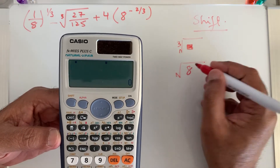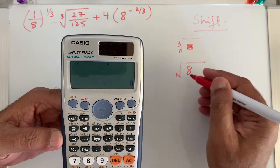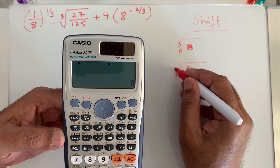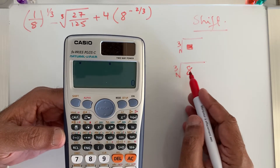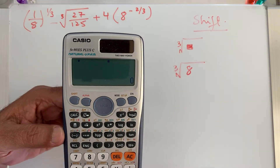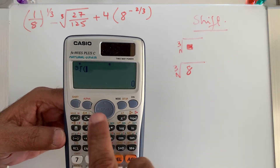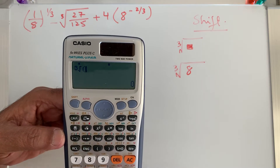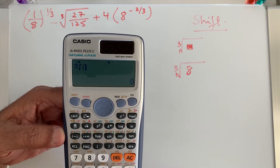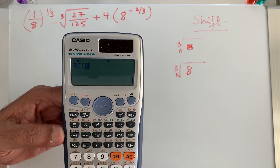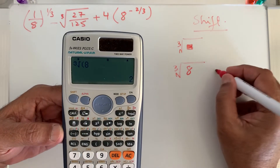For example, to take the cube root of 8, I press shift and then the cube root button. You can see the sign indicating you are going to take the cube root of a number. I enter 8, press equals, and the answer is 2.